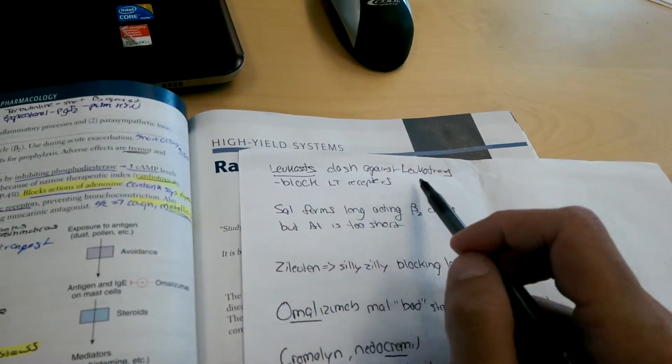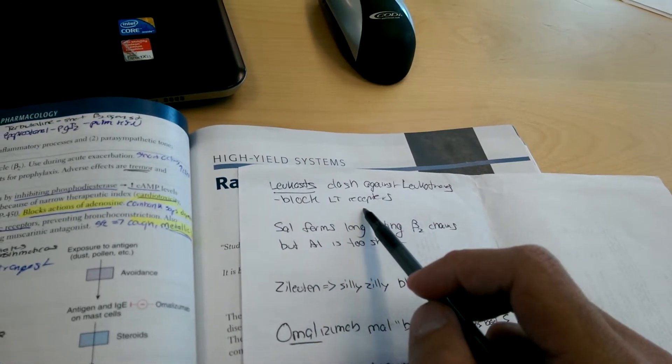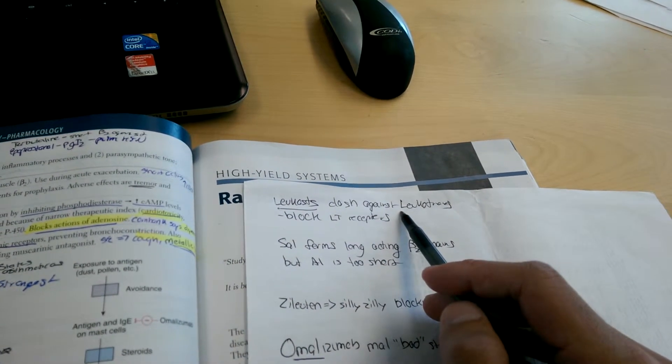Lukas. Lukas clash against leukotrienes, they block LT receptors. Lukas clash against the leukotriene receptors.